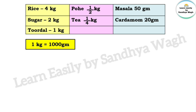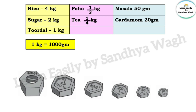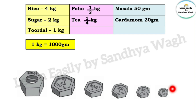1 kg is equal to 1000 grams. When we go to a shop, we can see weights of these types: 5 kg, 1 kg, 500 grams, 200 grams, 100 grams, 50 grams, 20 grams, and 10 grams.